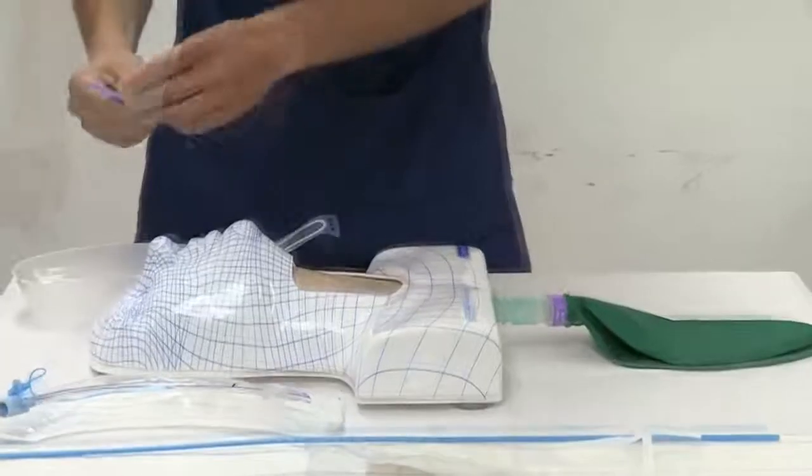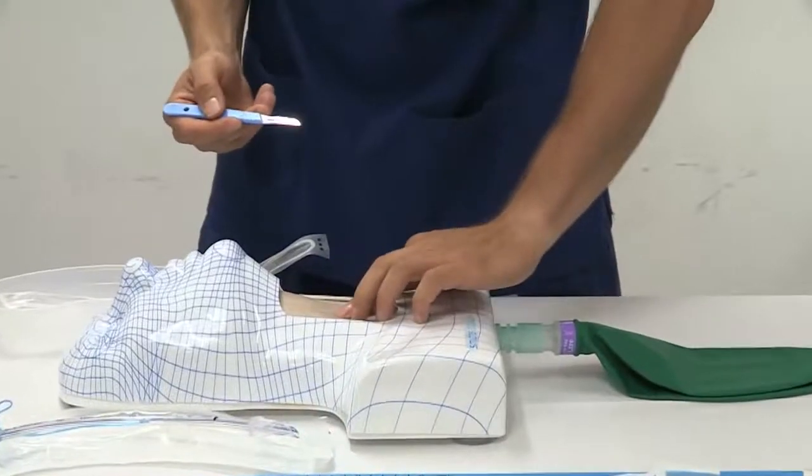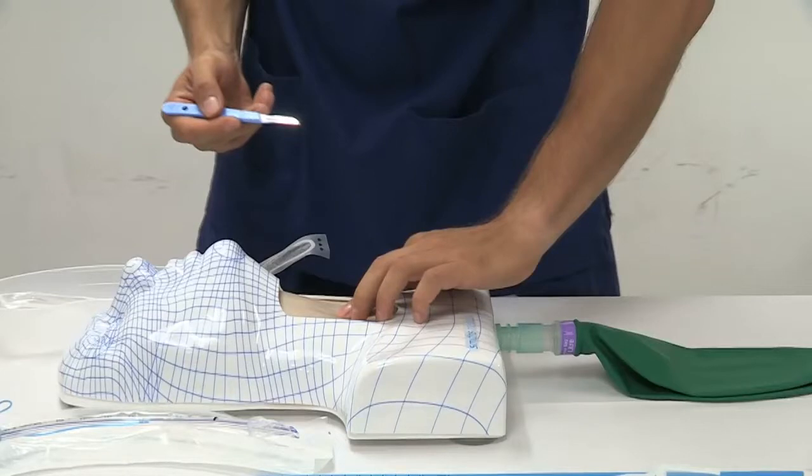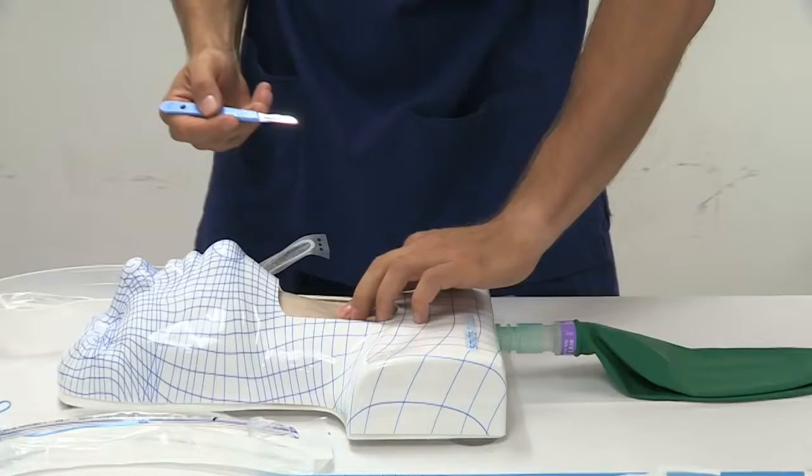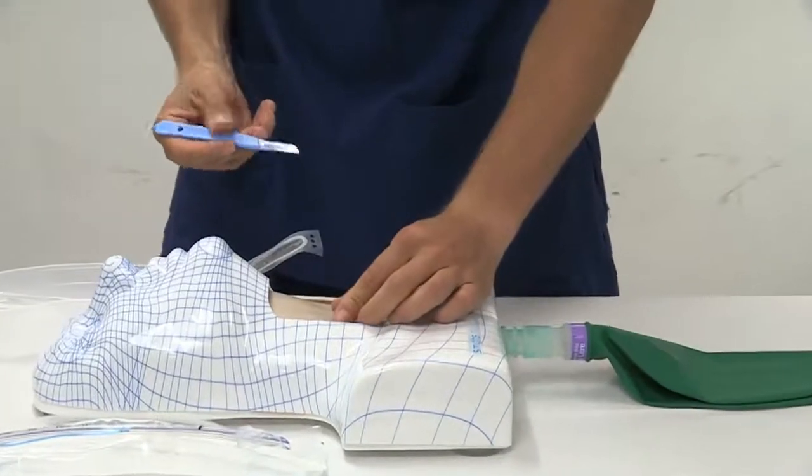The non-dominant hand identifies and stabilizes the cricothyroid membrane. When the cricothyroid membrane cannot be identified, the trachea may be used as an alternative location, but only if it is easily palpable.